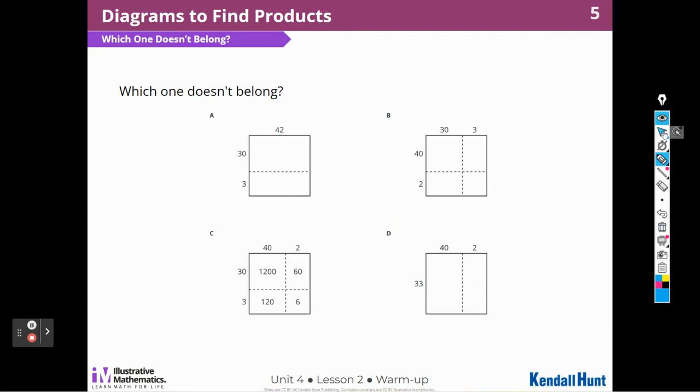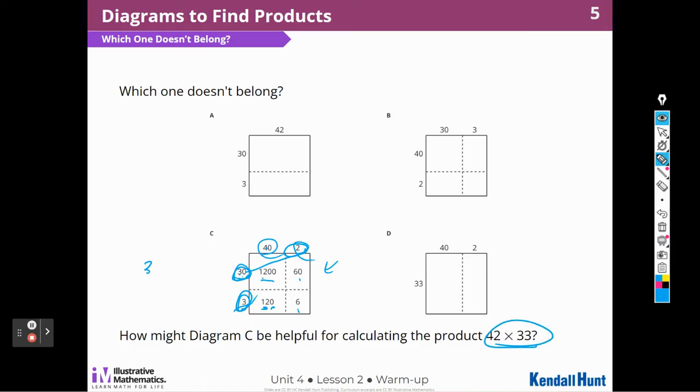So we could think about those in a lot of ways. I hope you guys remember these kinds of diagrams from when you were in primary school because we're going to use them a lot today to help us remember how to multiply large numbers. How might diagram C be helpful for calculating the product of 42 times 33? Well, that is a great question. I like it because it shows 30 times 40 is 1,200. Remember, 3 times 4 is 12, and we add those tens.